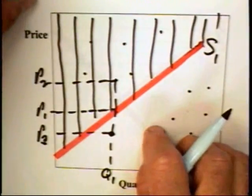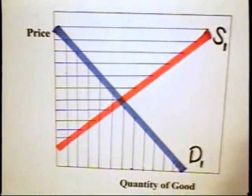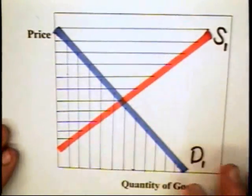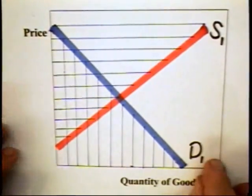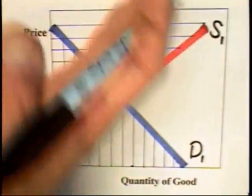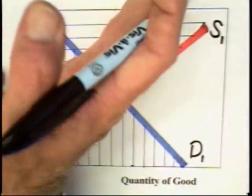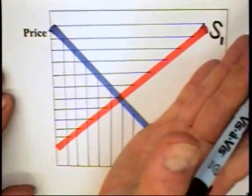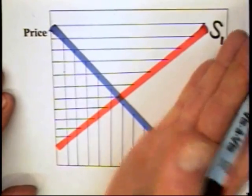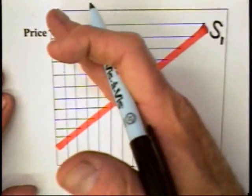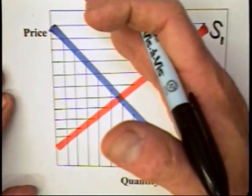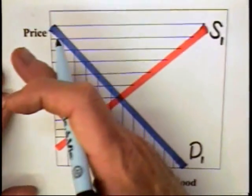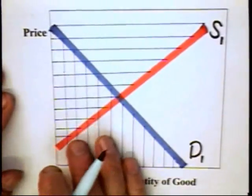Now, we can combine these two curves together. Again, any price-quantity combination above the supply curve is acceptable to producers. Any combination below the supply curve is unacceptable to producers. Any combination that's above the demand curve is unacceptable to consumers. Below the demand curve is acceptable to consumers.